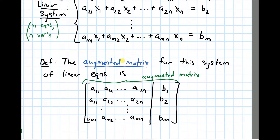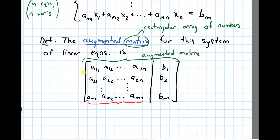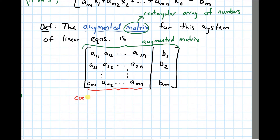This whole thing is what's called the augmented matrix. A matrix is a rectangular array of numbers. There's also terminology for the stuff appearing just on the left hand side of the augmented bar — that is called the coefficient matrix, and it's denoted A, since we've been calling each of the constants A sub something.